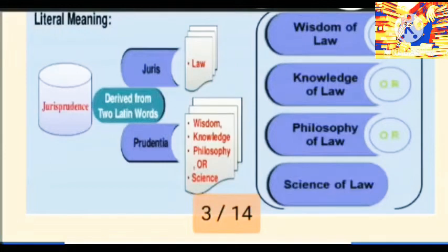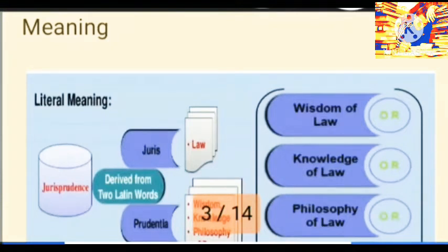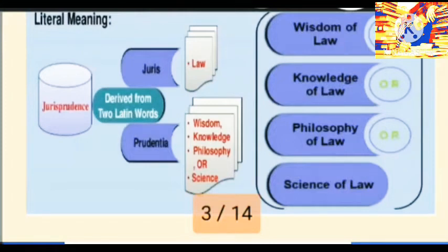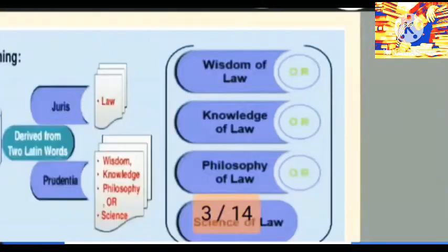The term 'PJ' — pharmaceutical jurisprudence — is derived from the Latin words: 'juris' meaning law, and 'prudentia' meaning wisdom, knowledge, or philosophy. So pharmaceutical jurisprudence means laws of wisdom, laws of knowledge, or laws of philosophy — the science of laws.